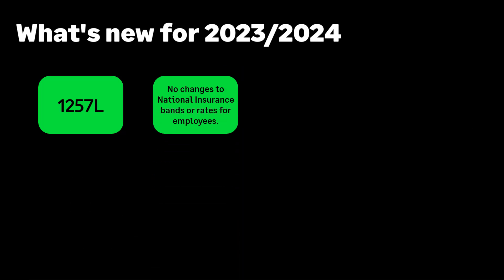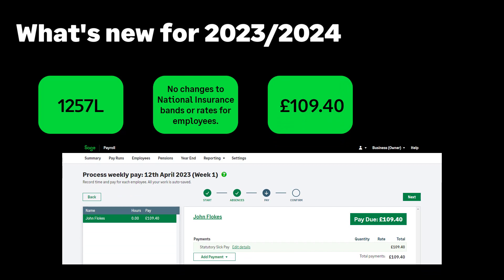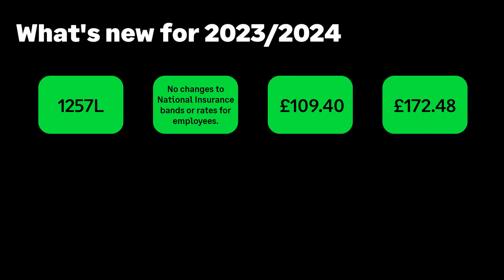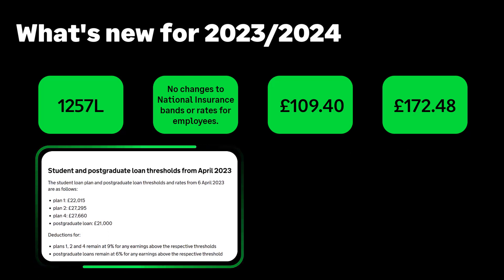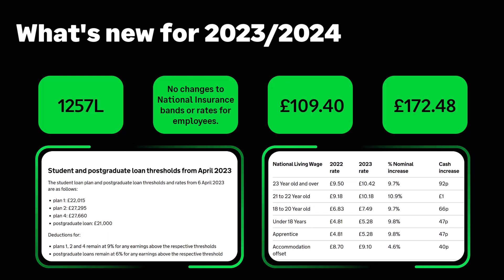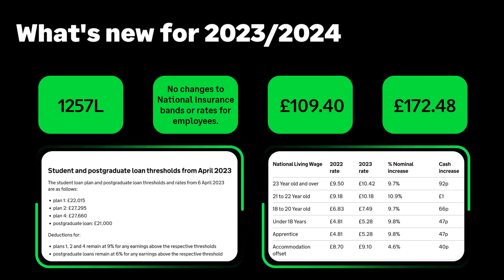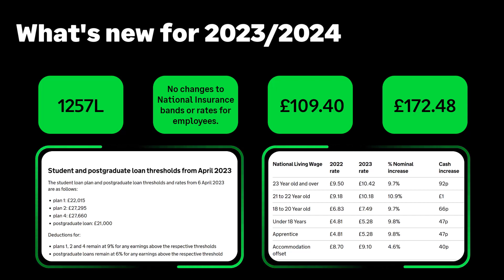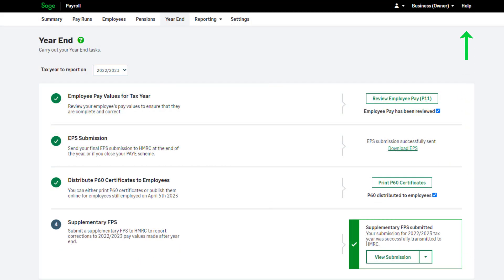There are no changes to the national insurance bands or rates for employees. From 6 April 2023, the statutory sick pay rate is £109.40 per week. The statutory parental pay has increased to £172.48 per week. Student loan thresholds have increased as shown. The rates for the national minimum and national living wage have increased from 1 April. If you would like to know more about legislation changes in the new tax year, you can visit HMRC's website or our Help Centre by clicking the Help option at the top of the screen.